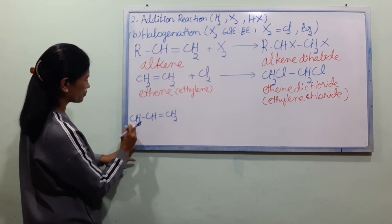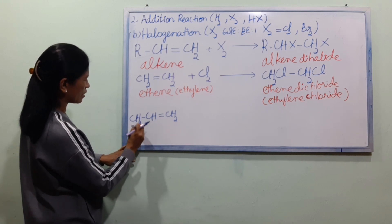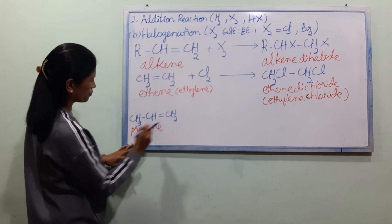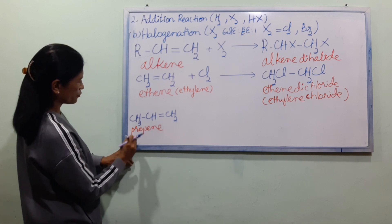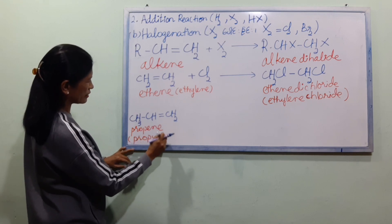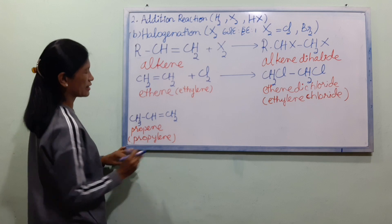Let's take a look at propylene — B, R, U... propylene — B, R, U, B, Y, L, E, N, E.